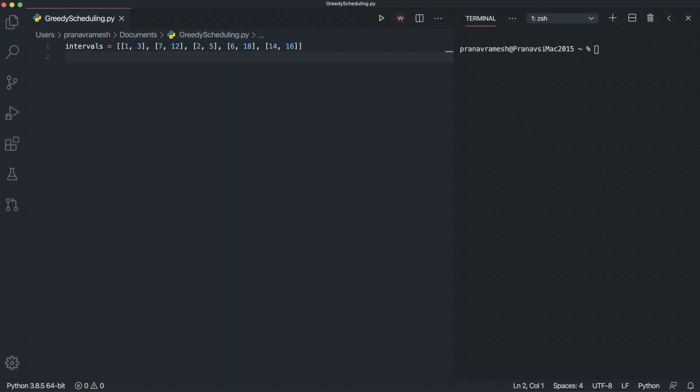So here we're just starting off with a sample list of intervals that we had used in our explanations. So it just has (1,3), (7,12), (2,5), (6,18), (14,16). And it's not sorted in any particular order.